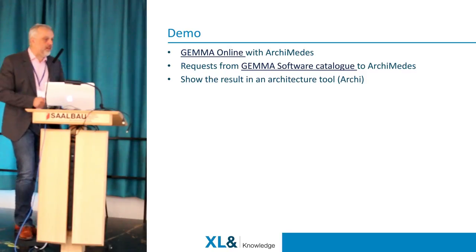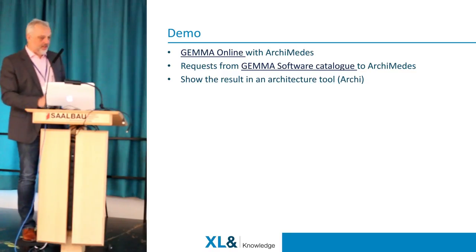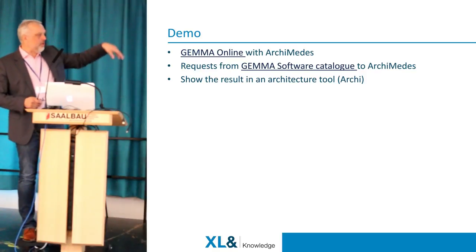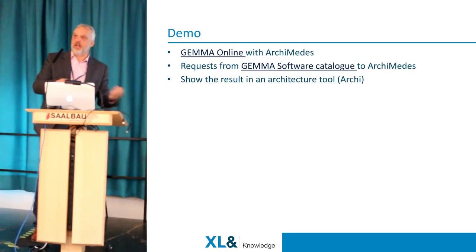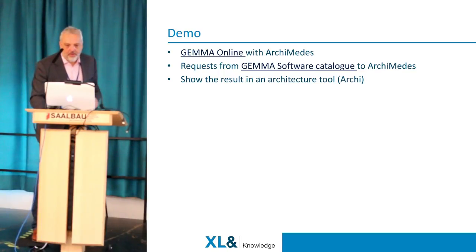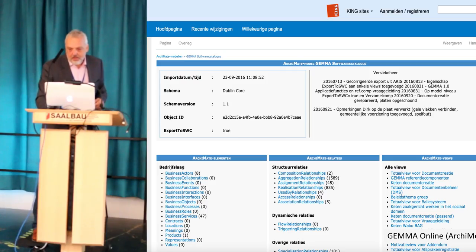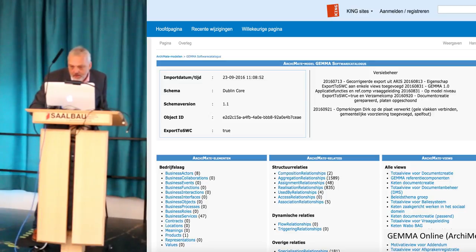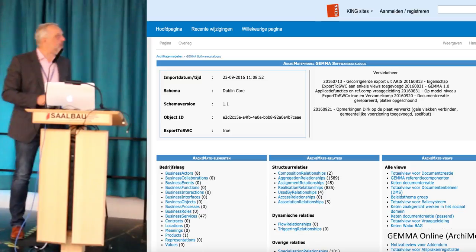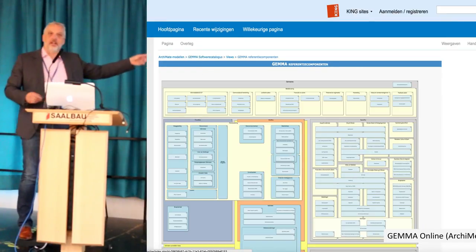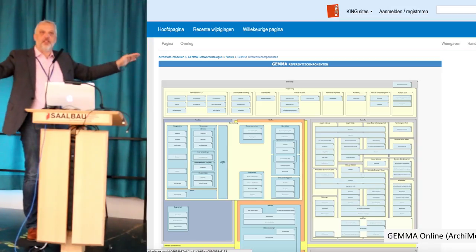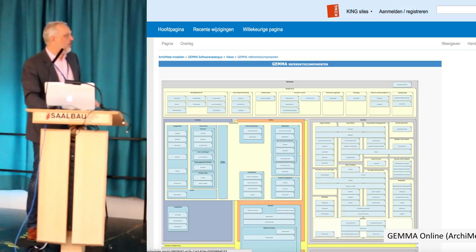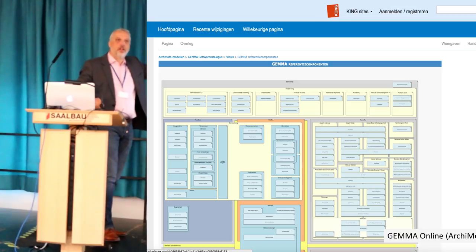There's also a model maintained in an enterprise architecture tool — a model we use for storing the reference components and making a connection to the software packages in the software catalog. That's the model for the API. This is the model — if you go to a municipality in Holland and go to the IT department, you'll see this picture hanging on the wall filling the whole wall. It's filled with all the packages they use themselves. This is an overview of all the reference components.